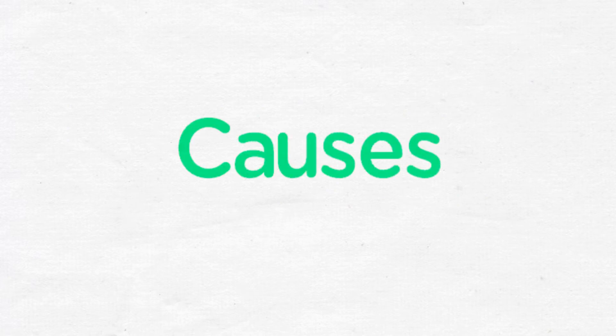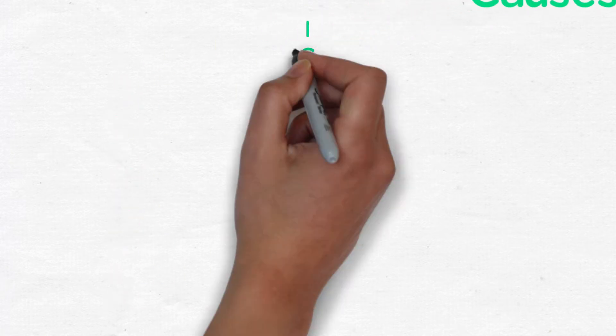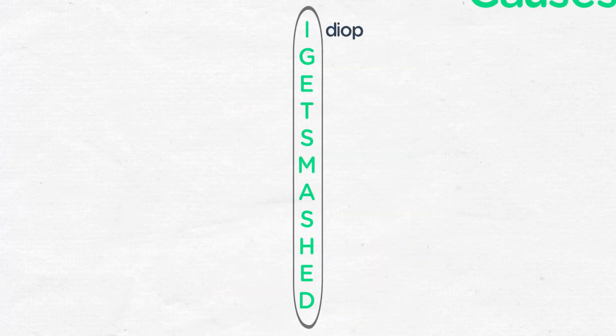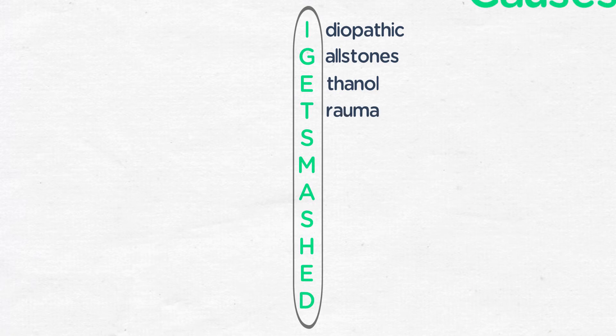There are a multitude of causes of acute pancreatitis, with a commonly used mnemonic of I GET SMASHED that highlights these causes. I is for idiopathic, G is for gallstones, E is for ethanol, T is for trauma, S is for steroids, and M is for mumps or malignancy.